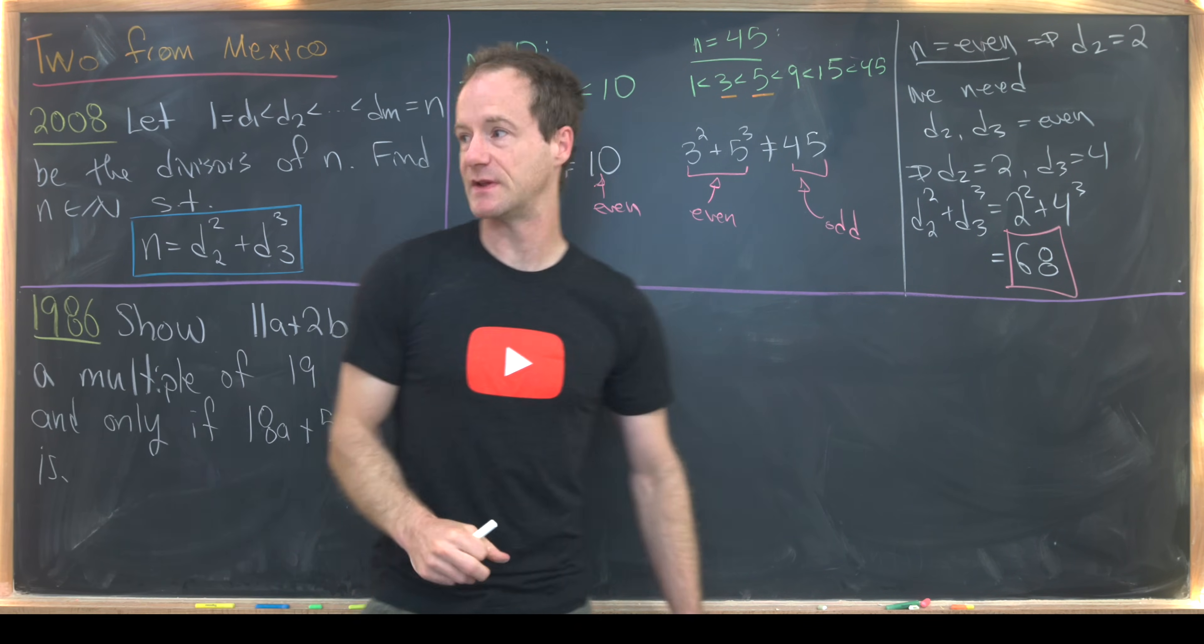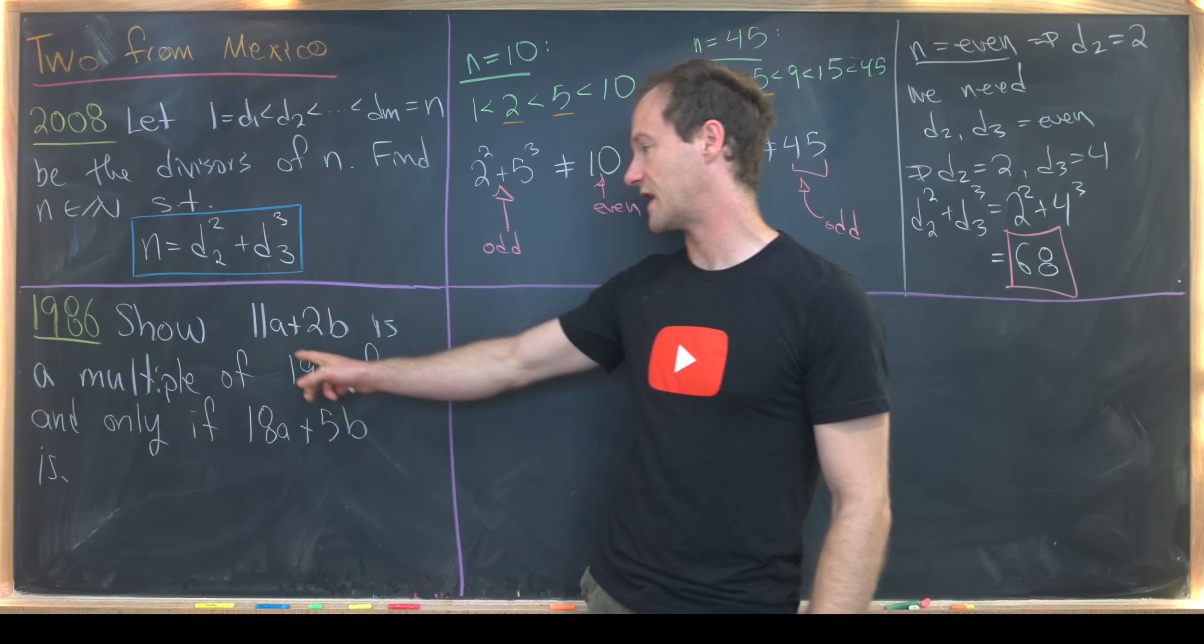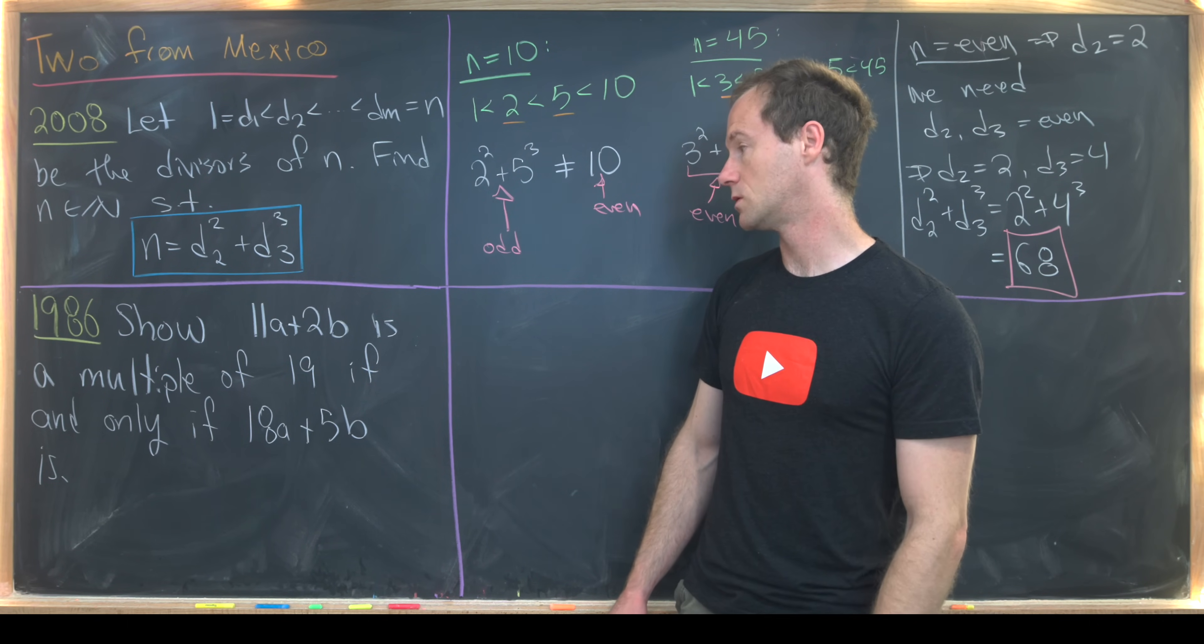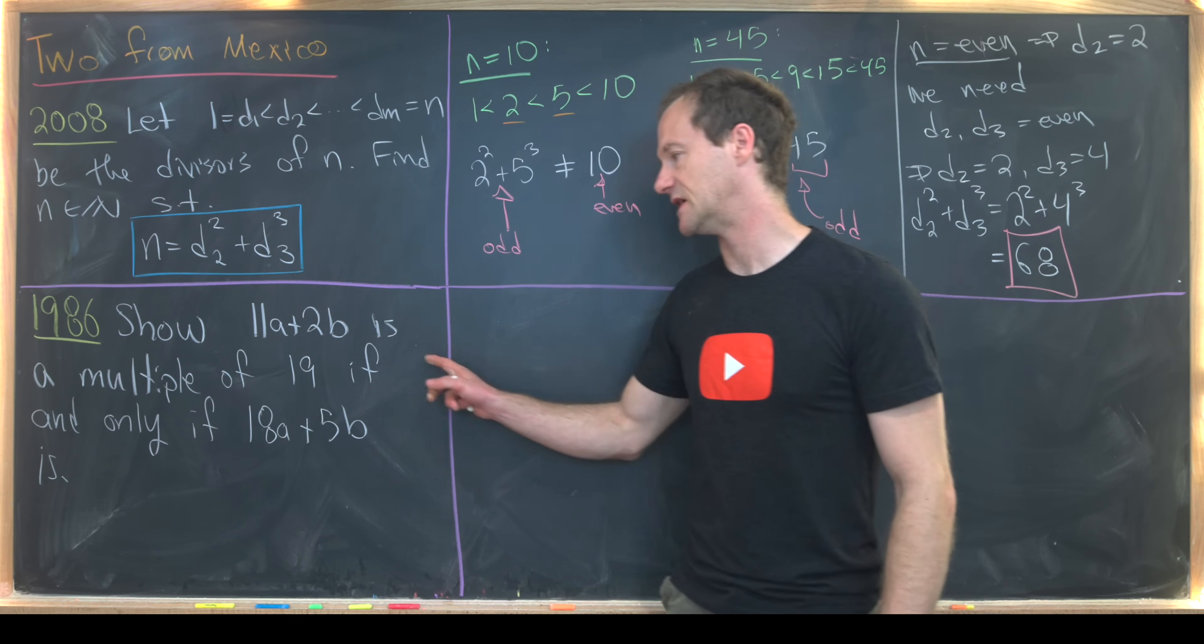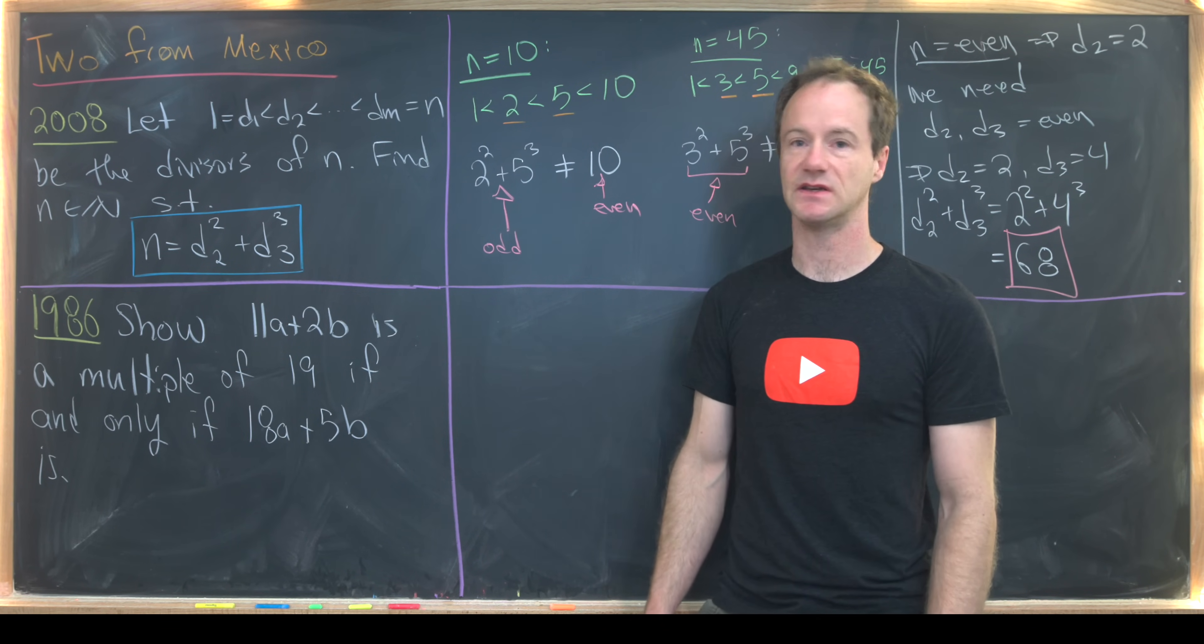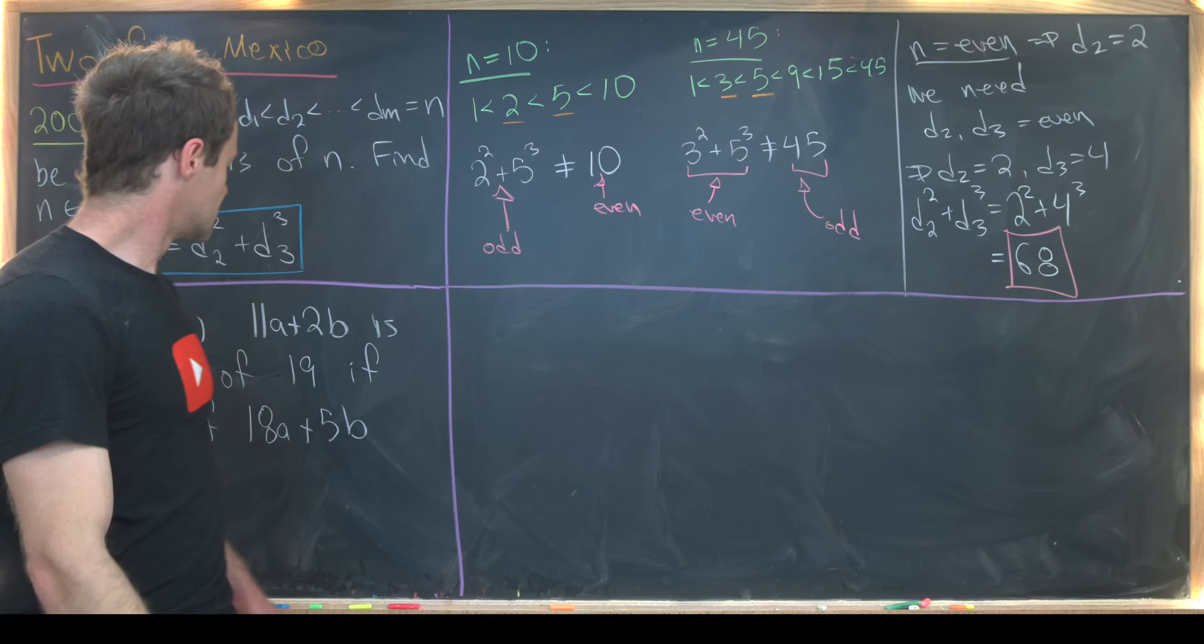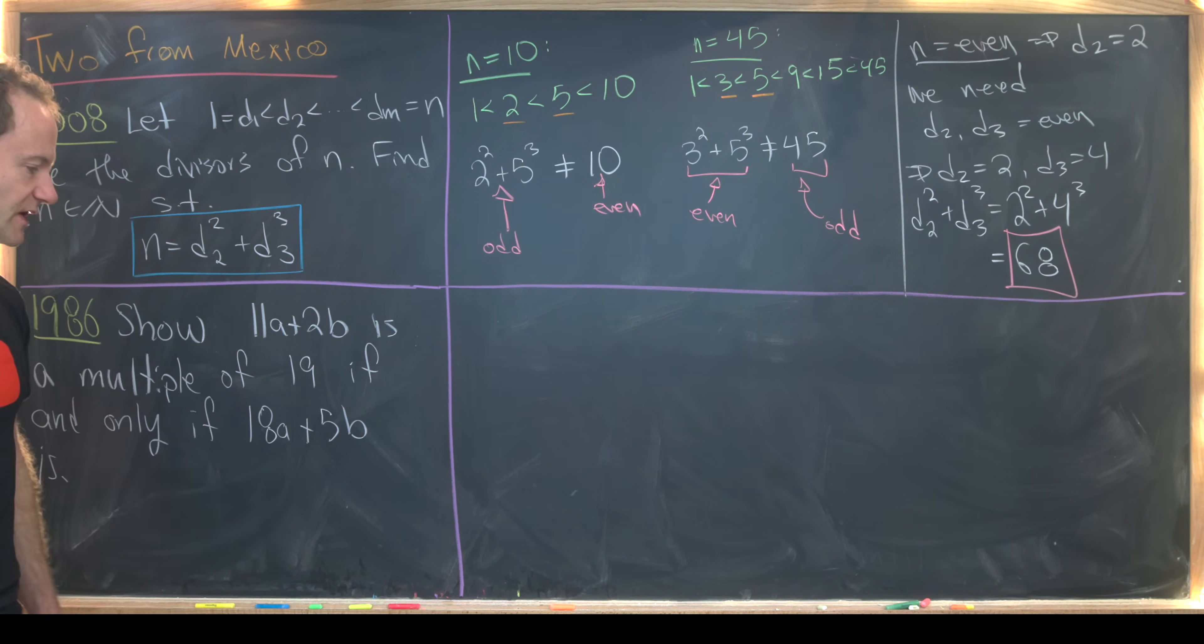So now let's jump into this second problem. Here, our goal is to show that if 11A plus 2B is a multiple of 19, where A and B are natural numbers. So our goal is to show 11A plus 2B is a multiple of 19, if and only if 18A plus 5B is a multiple of 19, where A and B are natural numbers. But I didn't write that here. So our plan is to take some sort of combination of these two guys to make it equal to an obvious multiple of 19.